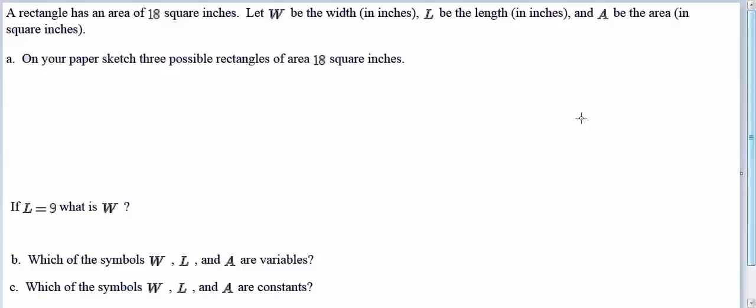Hi. In this example, we're told that a rectangle has an area in square inches, and three variables are defined: W, which will represent the width, L, which will represent the length, and A, which will represent the area. To do this problem, it's going to be important to remember our formula for area.